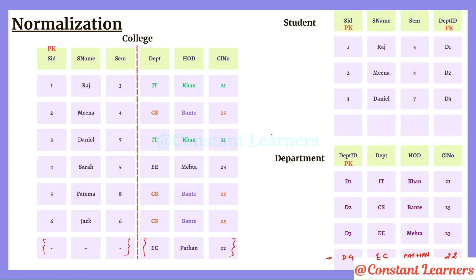For updation anomaly: if Professor Bante is now being replaced by Professor Valde again, in the old single-table design we had to change multiple entries. But now we only have to change this one entry in the department table. The department ID stays the same in the student table — only one cell changes from Bante to Valde. There are no multiple changes and no inconsistency in the table.